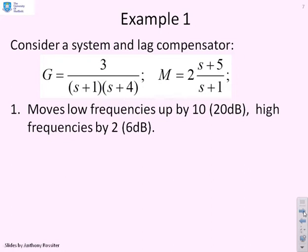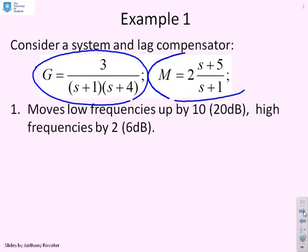Here's an example. Consider a system G = 3 / [(s+1)(s+4)] and a lag compensator M = 2·(s+5)/(s+1). We want to find the Bode diagram of GM by first looking at the Bode diagram of G, then the Bode diagram of M, and adding them together to see the impact of M on the overall Bode diagram. The lag compensator has K = 2 and beta = 5.